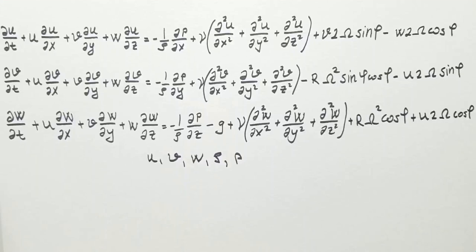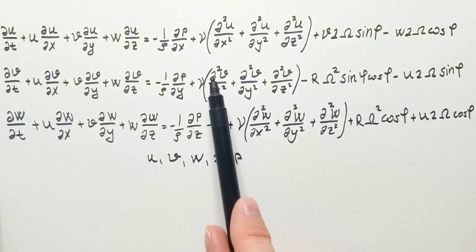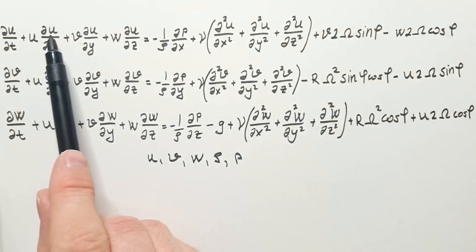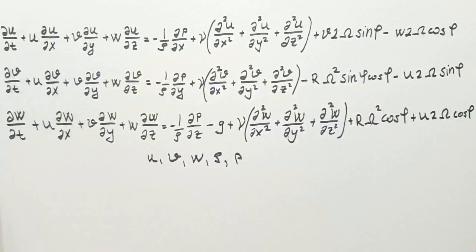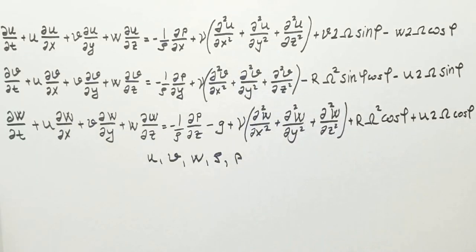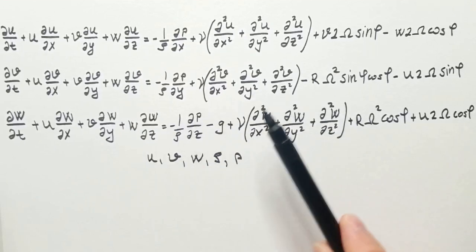These are partial differential equations, as you can see, we have partial derivatives. They are nonlinear equations because function is multiplying its own derivative, and they are coupled, which means that u, v, w velocities are interchangingly occurring in all equations. We know that these equations work experimentally, however, there is no mathematical proof yet that they will give a solution in any given situation. In particular, there are three open questions related to these equations.